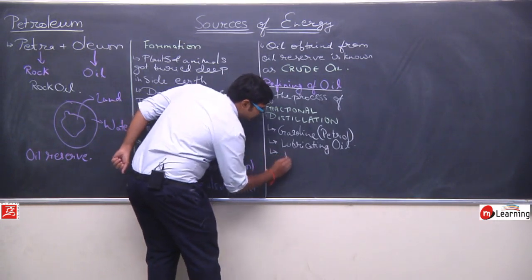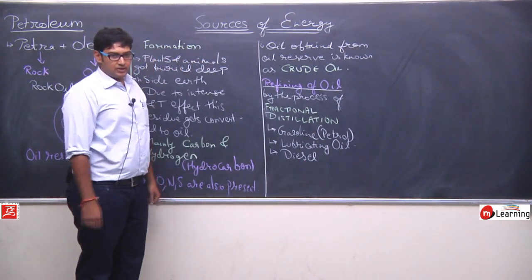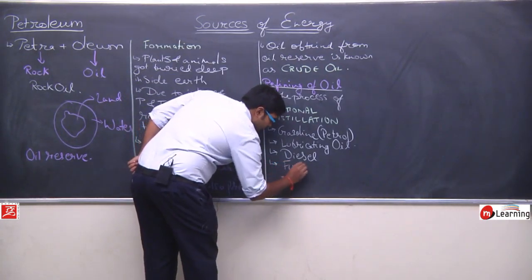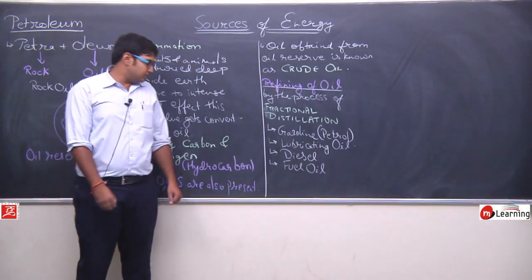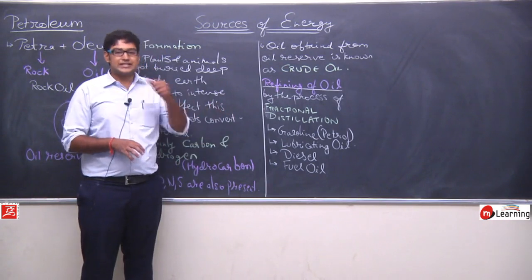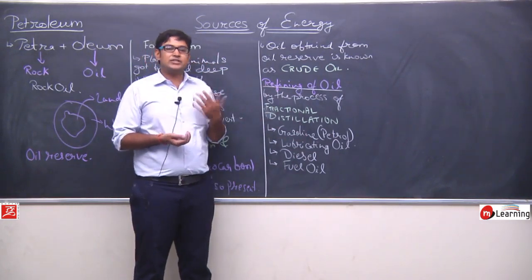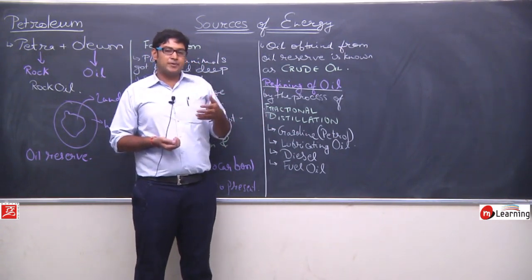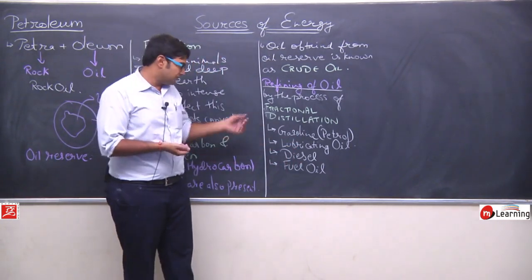Third thing jo banti hai that is diesel — diesel ka bahut zyada use kiya jata hai. Diesel ke baad banta hai fuel oil. Yeh jo fuel oil form hota hai, this is basically used in machines, jo automation machines hoti hain, factories, industries. Humare jo kaam ka product hai that is gasoline, diesel and lubricating oil. Aur iske alawa bahut saare products hoti hain — wax, paraffin wax hota hai, asphalt hota hai — alag alag purpose ke liye use kiya jata hai.